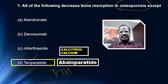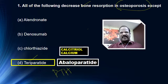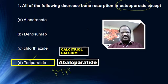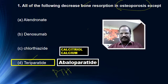So these are the four important drugs useful for treating osteoporosis as osteoblastic drugs. The remaining options — alendronate, denosumab, and chlorothiazide — are drugs inhibiting osteoclastic action, thereby preventing bone resorption. That finishes the first question.